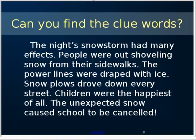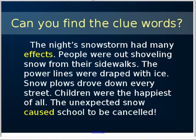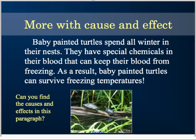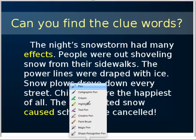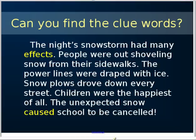You must have found some clue words. Here are the two main ones that I found: 'effects' and 'caused.' That flat out tells you this is cause and effect. Now let's look at this. The cause — hopefully you realize — is the snowstorm. I'm going to highlight that in pink. There's one big snowstorm, so that was the one cause.